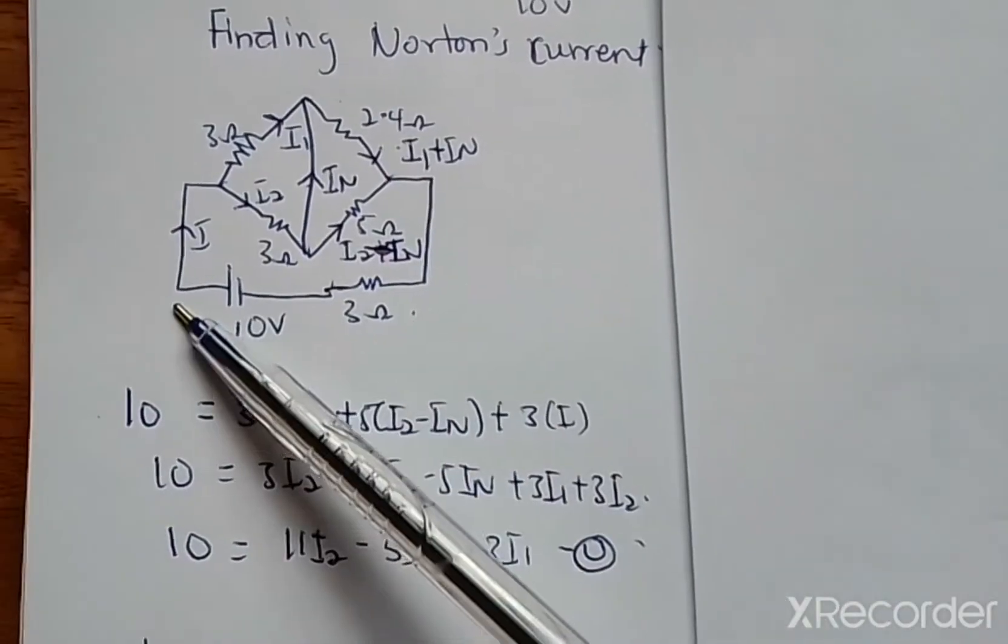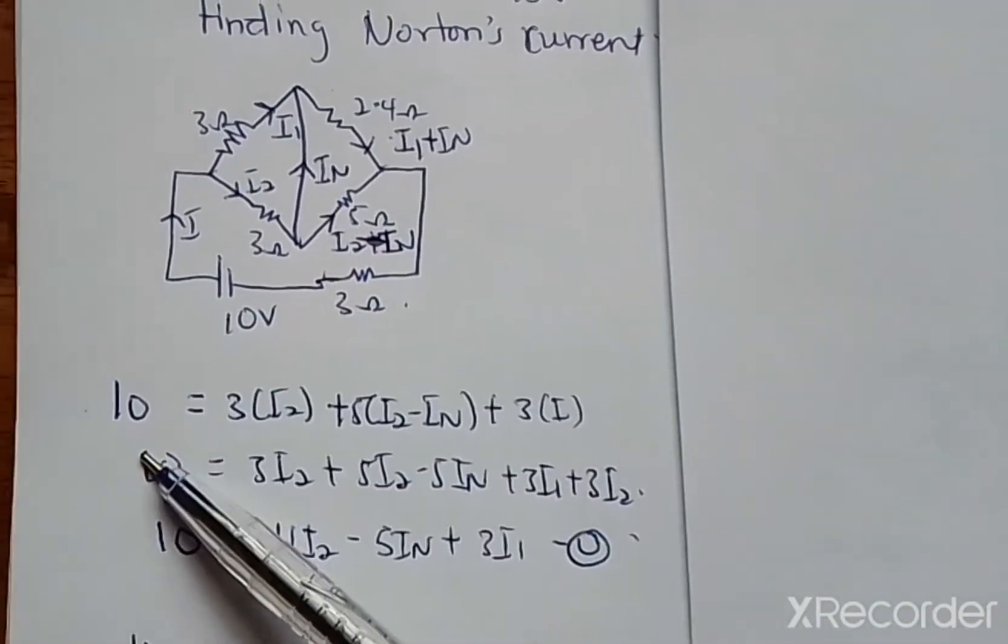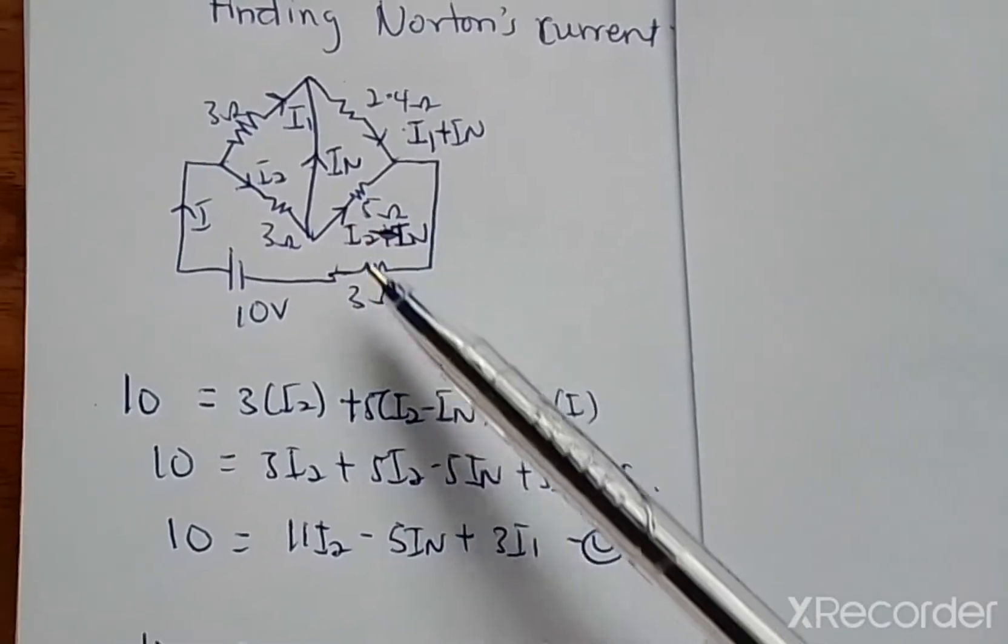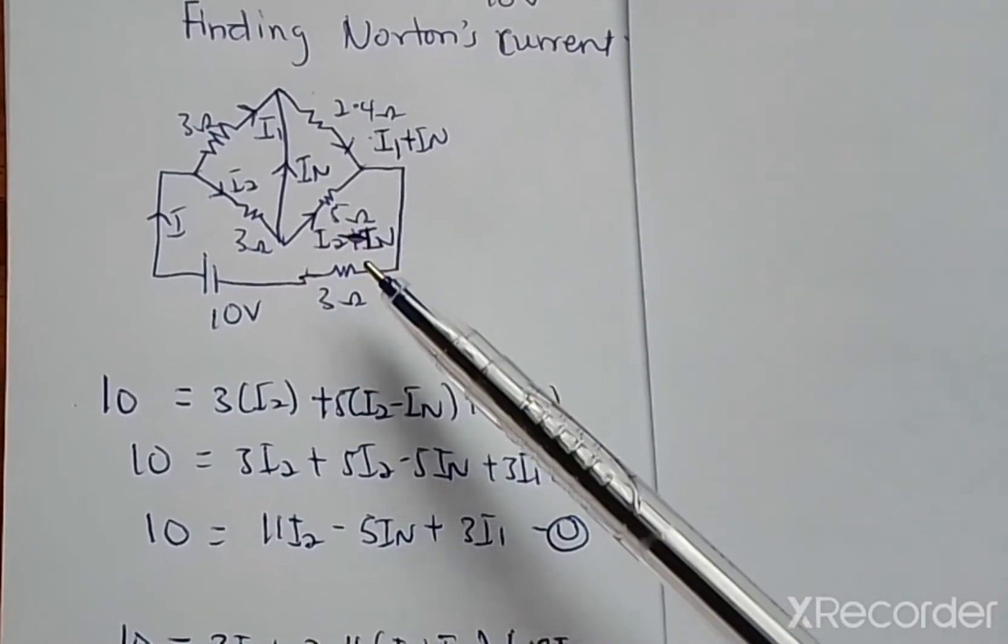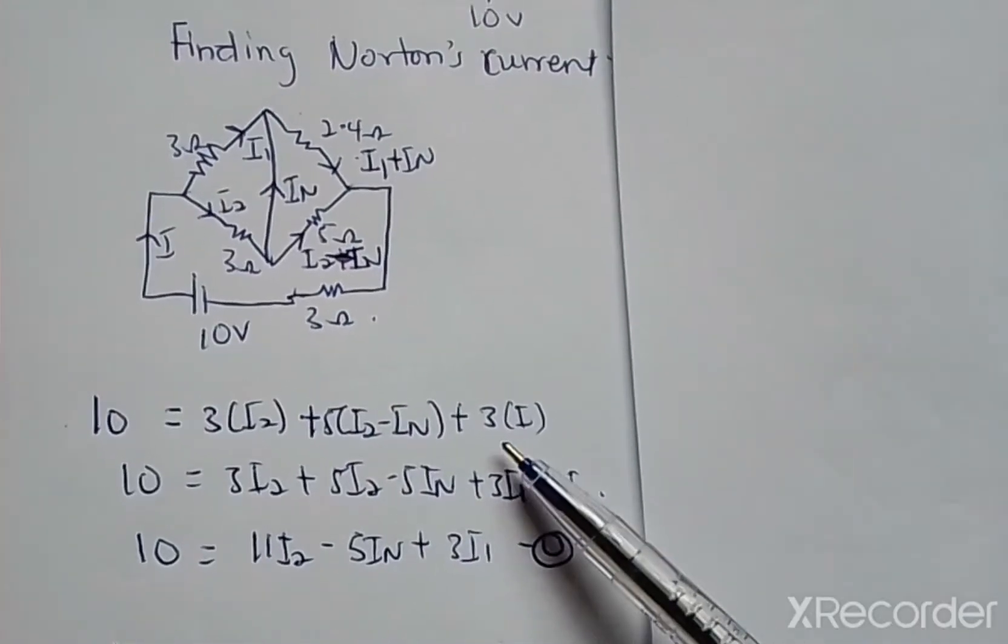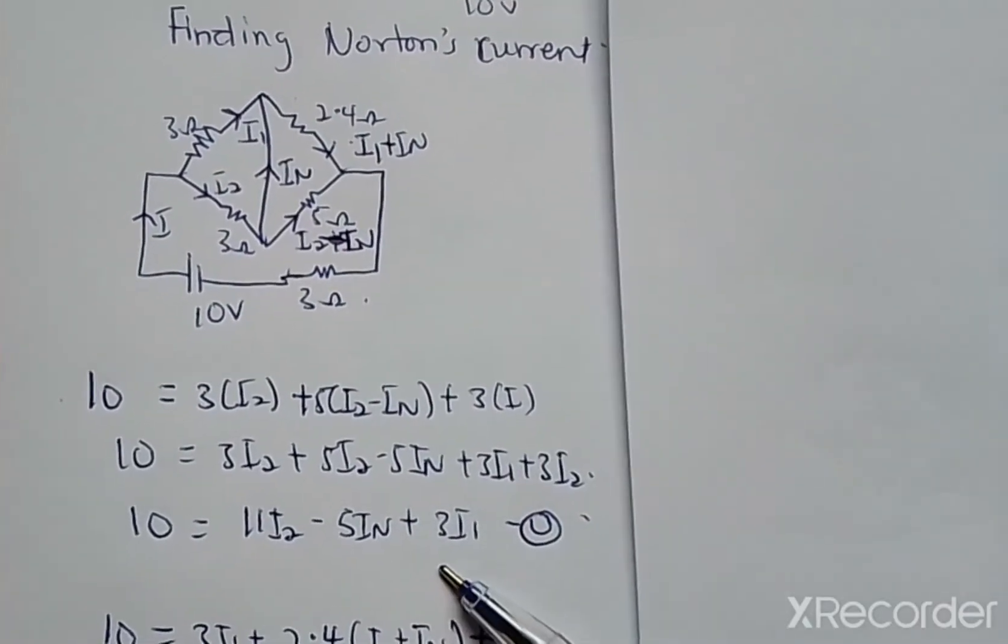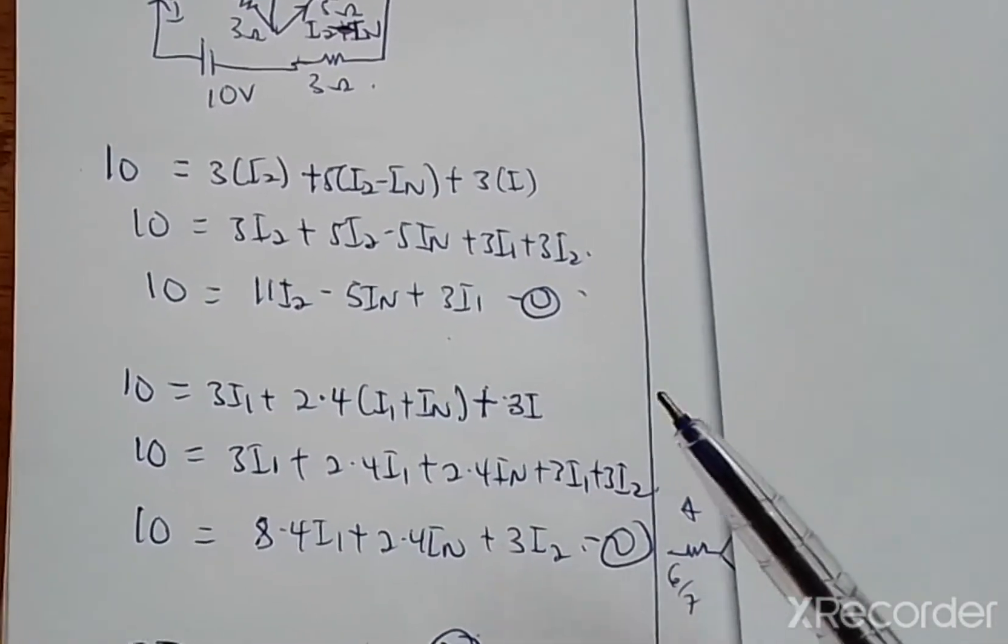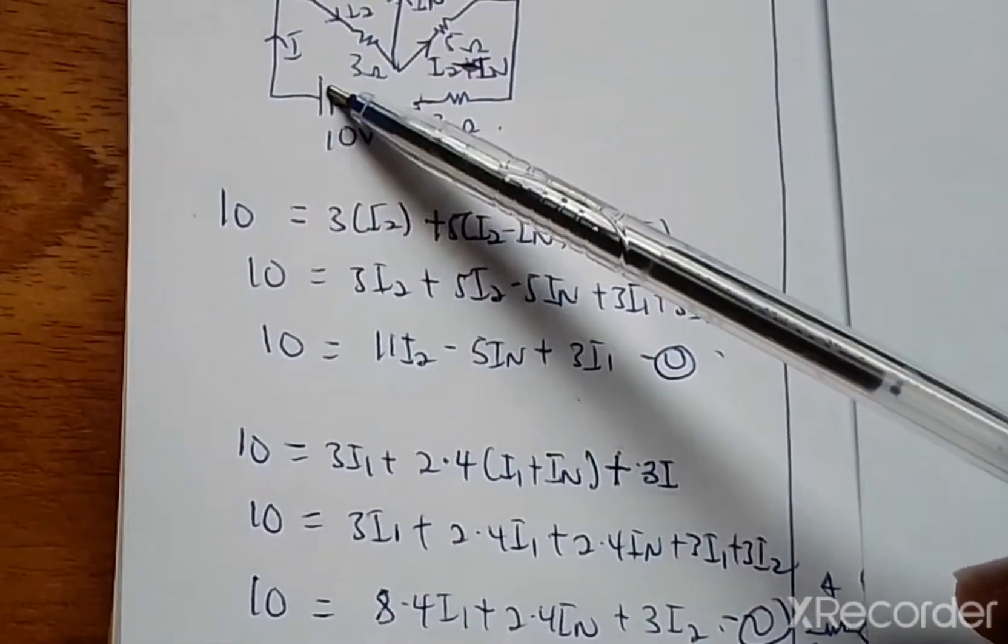Let me take this loop. We are going to get 10 equals the voltage drop here, 3I2, the voltage here 5 ohms multiplied by I2 minus IN, and the voltage drop here 3I. When you simplify this you get this as our first equation.